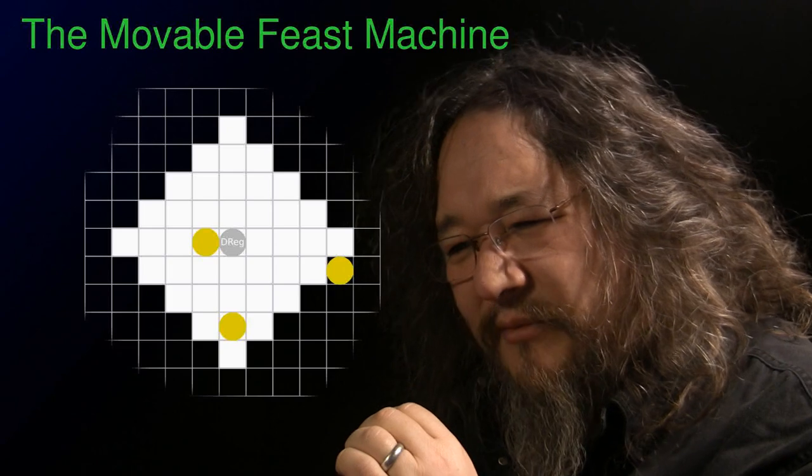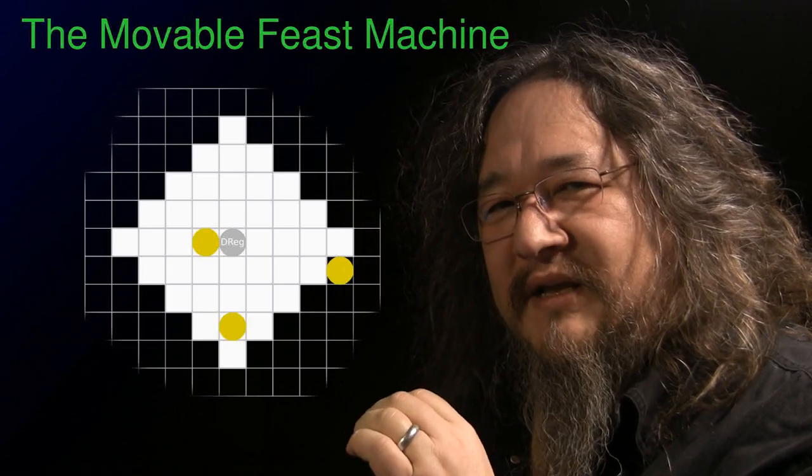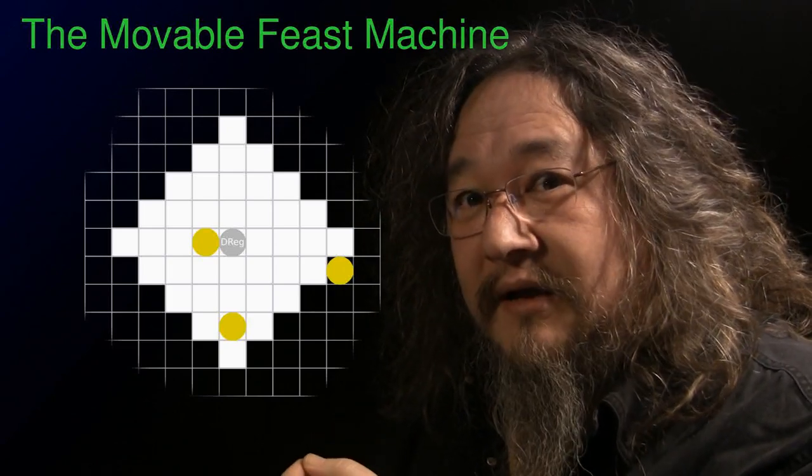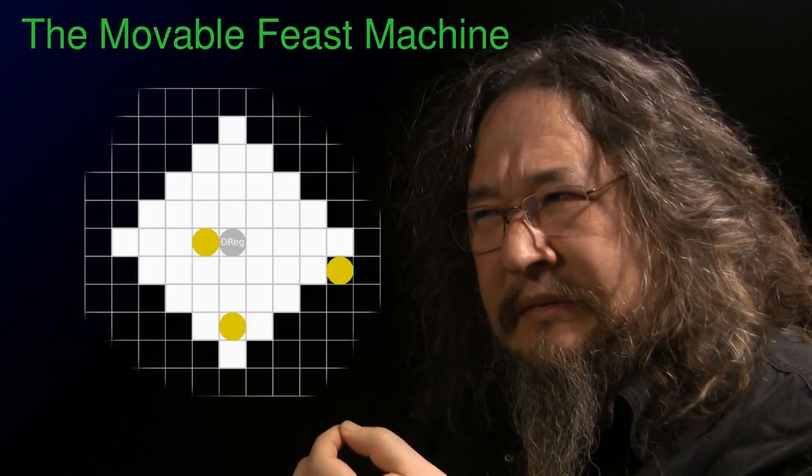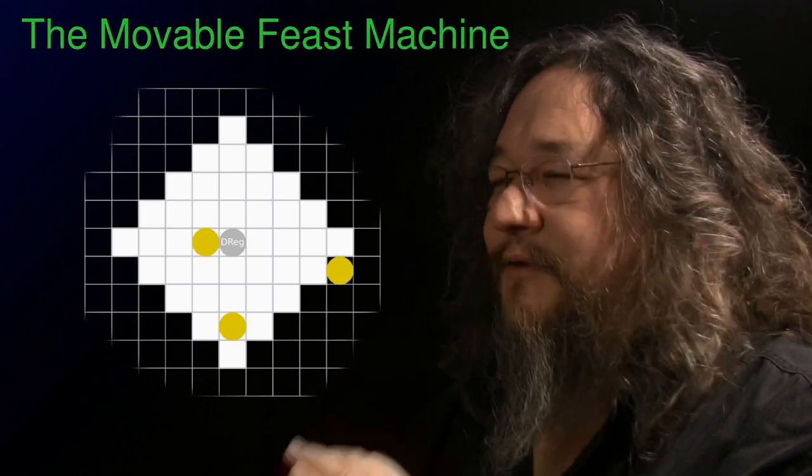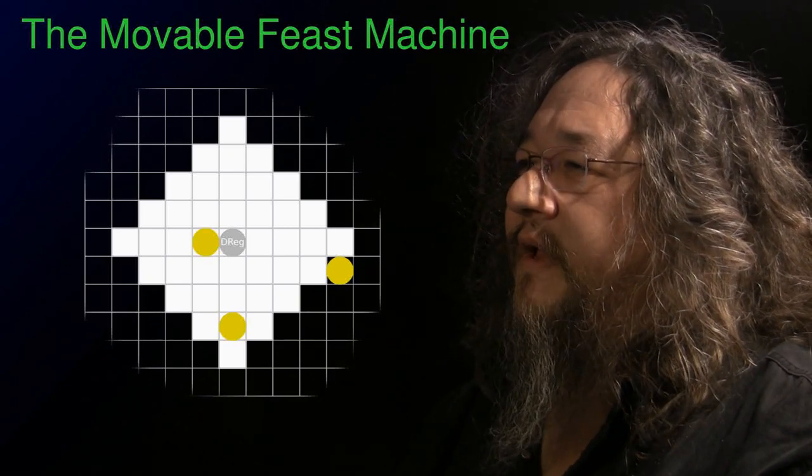And with a very low probability, instead of creating a res, it'll create another DREG. So DREG can reproduce into empty spots, but it's very low odds.